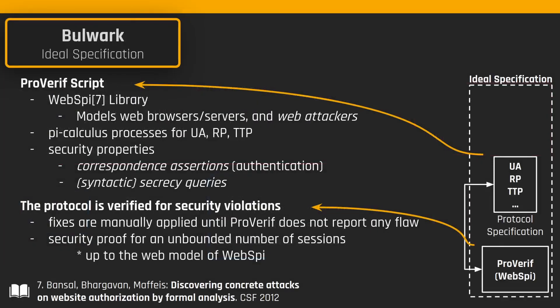The TTP, which has the best knowledge of the protocol it offers, starts by writing down a ProVerif specification expressing the intended security properties in terms of correspondence assertions and security queries. The protocol encodes the behavior of all protocol participants and is written using the WebSpy library, with support for important threats of the web security literature. The protocol specification is automatically verified for security violations, and the TTP iteratively applies fixes until ProVerif does not report any flaw. This leads to a security proof for an unbounded number of sessions, up to the model of WESPY. The WESPY model, although expressive, is not a complete model of the web, but it models enough components of the modern web to capture all known attacks against web protocols.